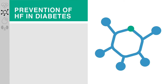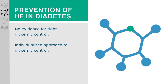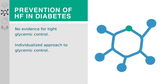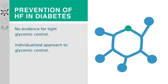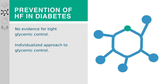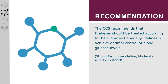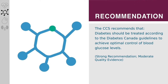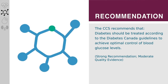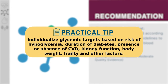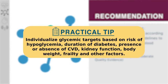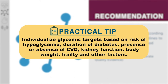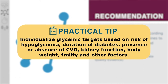In the past, several diabetes guidelines have advocated for tight glycemic control. However, there is no evidence that this approach improves cardiovascular outcomes, and some studies suggest harm, including increased heart failure, not to mention increased risk for hypoglycemia. The CCS recommends that diabetes should be treated according to Diabetes Canada guidelines to achieve optimal control of blood glucose levels. Individualization of targets should take into account factors such as risk of hypoglycemia, duration of diabetes, presence or absence of cardiovascular disease, kidney function, body weight, and frailty.